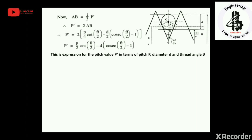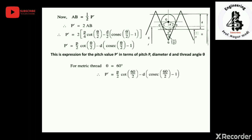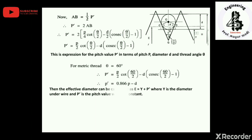This expression gives the pitch value p' in terms of pitch p, wire diameter d, and thread angle θ. For the metric thread, θ = 60°. Substituting this value into the equation for p', we finally get p' = 0.866p − d.